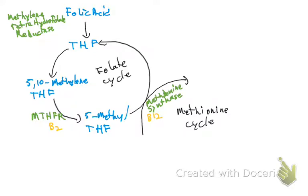Methionine synthase converts 5-methyl tetrahydrofolate back to tetrahydrofolate, which originated from folic acid. This same enzyme — methionine synthase with vitamin B12 — also works in the methionine cycle, where it converts homocysteine to methionine.